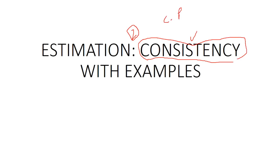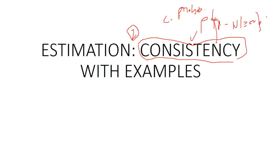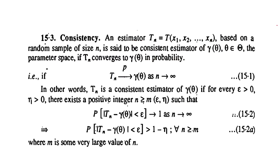What is convergence in probability? Just like Chebyshev's inequality — for example, if x̄ is an estimator, then the probability of |x̄ − μ| being less than some value relates to 1/k². Consistency is defined similarly. We will now see the formal definition and examples.